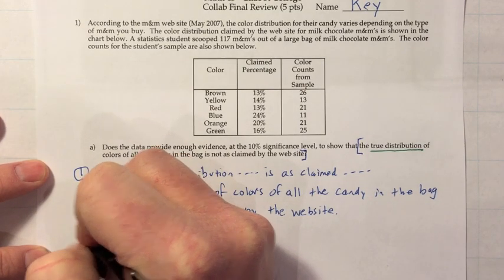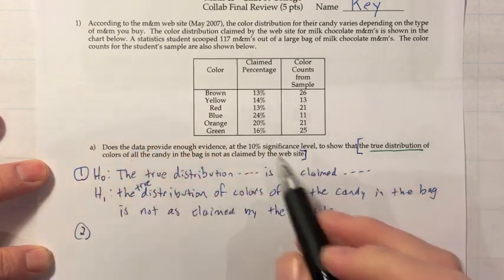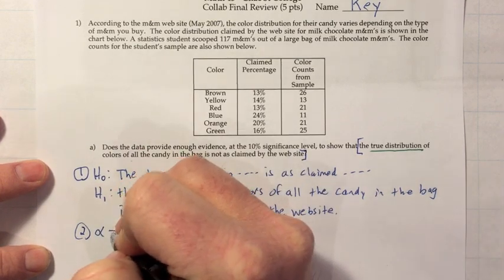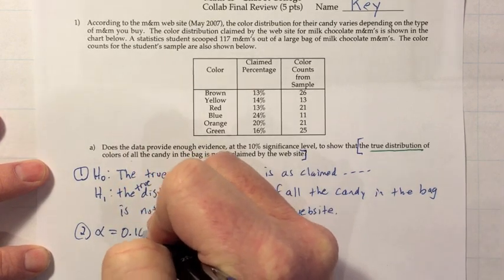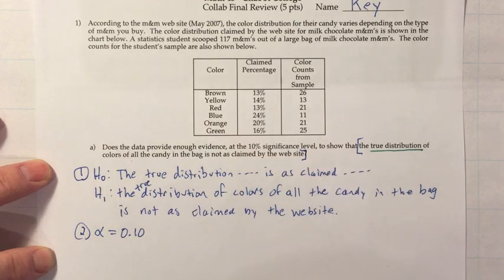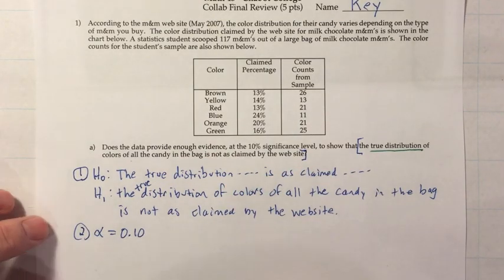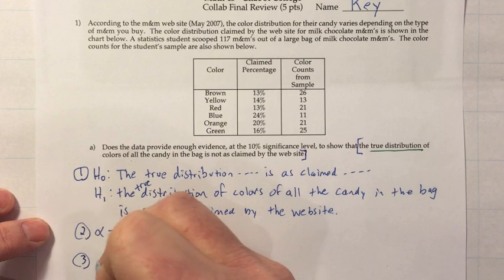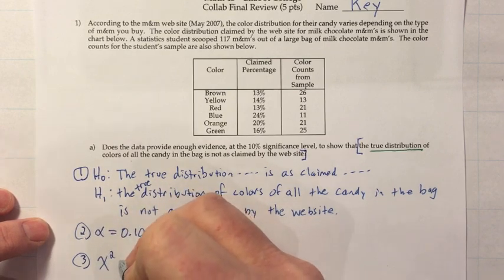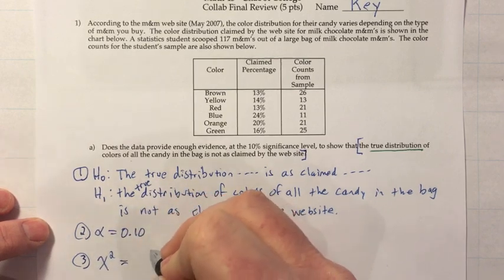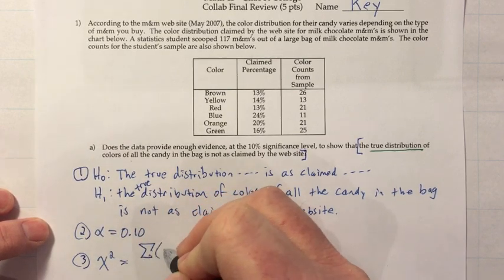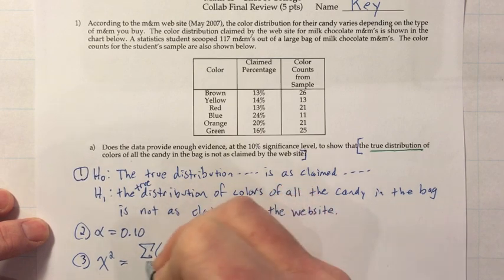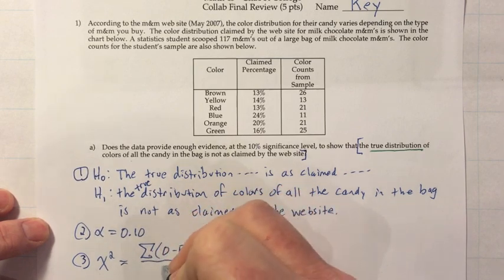Step two is to decide on a significance level, but that's already been decided, so we just make a note: alpha is 0.10. Now for the goodness-of-fit test we want the test statistic, which is a chi-squared test statistic. That is the sum of the values of (O minus E) squared over E. We need to make a table to figure that out.